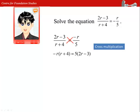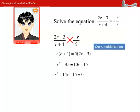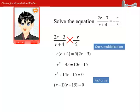After doing cross multiplication and rearranging, we get r squared plus 14r minus 15 equals to 0. Factorizing, we get r minus 1 times r plus 15 equals to 0.